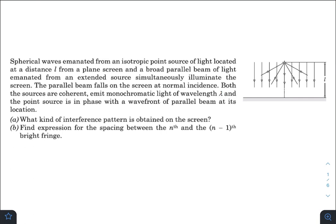So in today's question, we have spherical waves emanated from an isotropic point source of light located at a distance L from a plane screen, and a broad parallel beam of light emanated from an extended source simultaneously illuminate the screen. The parallel beam falls on the screen at normal incidence. Both the sources are coherent, emit monochromatic light of wavelength lambda, and the point source is in phase with the wavefront of parallel beam at its location.